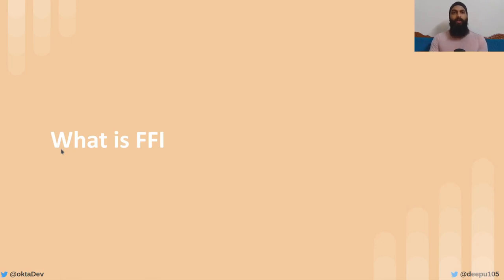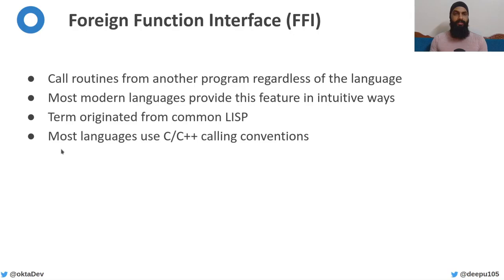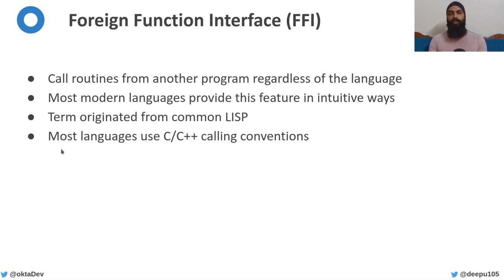So let's see what is a foreign function interface. A foreign function interface is the ability to call functions or routines written in one programming language from another. This is generally used to access native functions or programs on the host OS. Most languages provide this feature out of the box in some form.